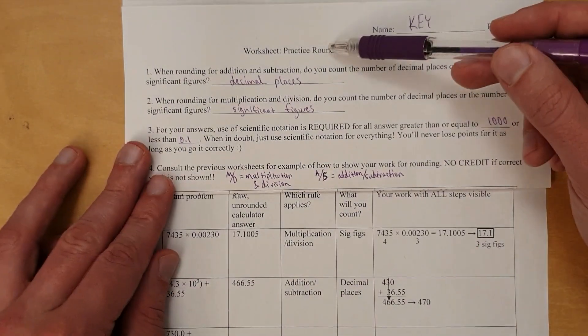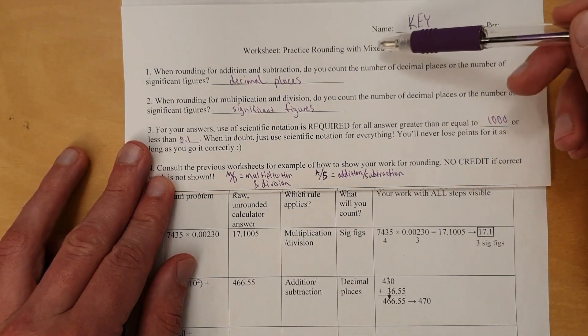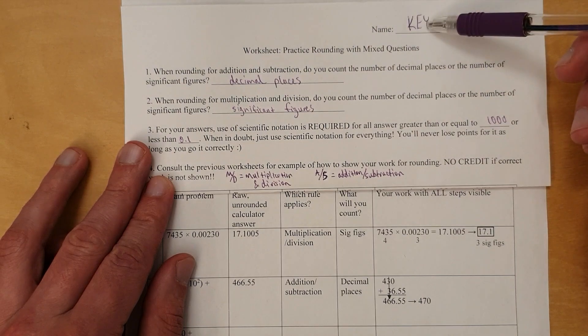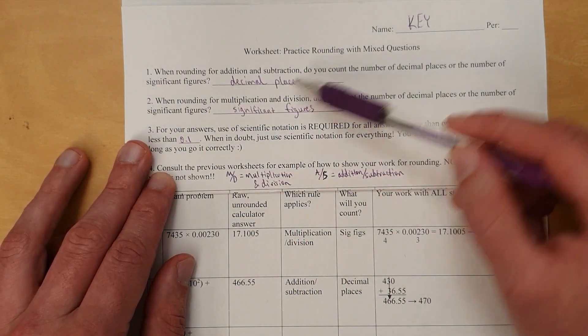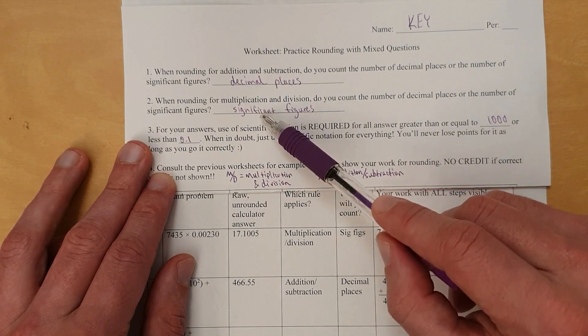Let's go through this and talk about how to do practice with mixed questions of some multiplication division, some addition subtraction. So as a reminder, for addition subtraction, you count decimal places. For multiplication division, count sig figs.